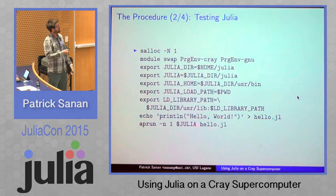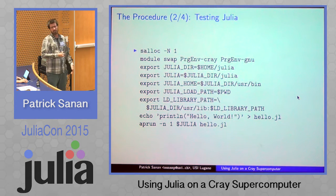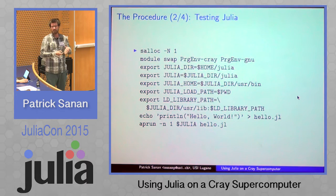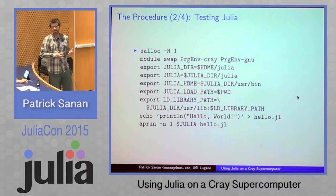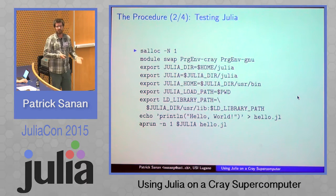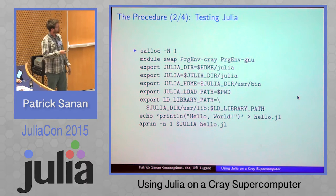This is the way we actually run the code — this is how you get an interactive session. Load our compilers, export some things into the environment so that Julia knows where to look for shared libraries. Running things is quite similar to running an MPI job; this is just Cray's name for MPI run. The difference is that when I call this function, it takes my executable, sends it to a remote node, and runs it there. This is kind of the wall between the user and the compute nodes that you have to be very wary of when using these machines.